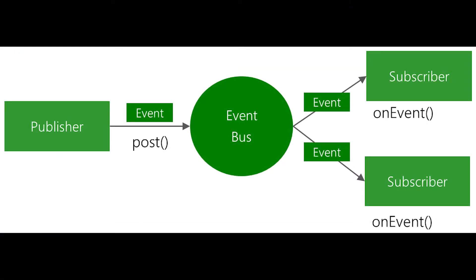Let's begin from the definition of events. An event is like a trigger that triggers some function or method when something is happening. Let's imagine we order something from Amazon — when the package comes to our town, we get a notification. Amazon doesn't check the package info every second or every tick; they just wait for the event. When the package arrives at the sorting center, the worker scans the code and it automatically triggers an event that goes to Amazon's backend and notifies the client that something happened.